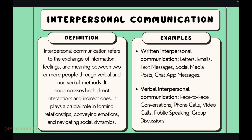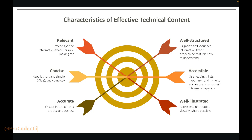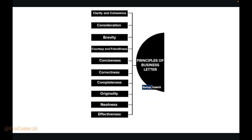When you look at your exam paper, first read it carefully — give 10 to 15 minutes to understand what questions are being asked, then start writing. Characteristics of effective technical content: well-structured, meaning organized and sequenced so information is easy to understand; accessible; well-illustrated; accurate; concise — keep it short and simple; complete; and relevant.